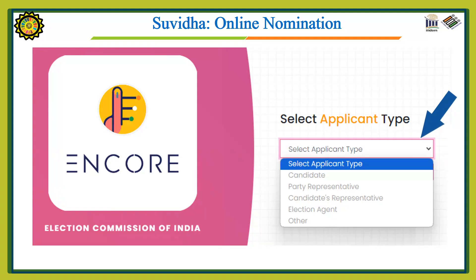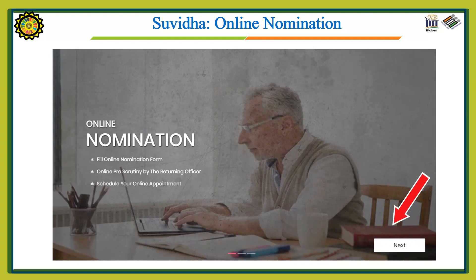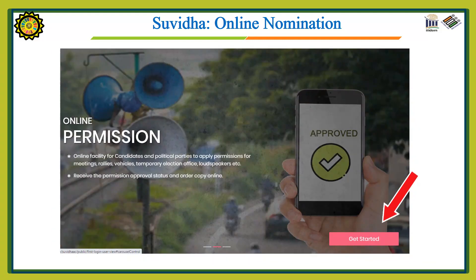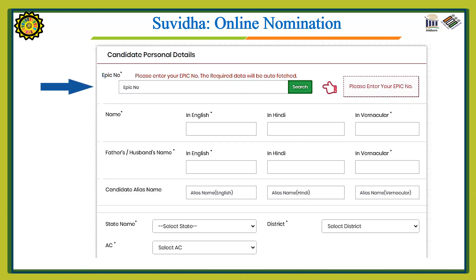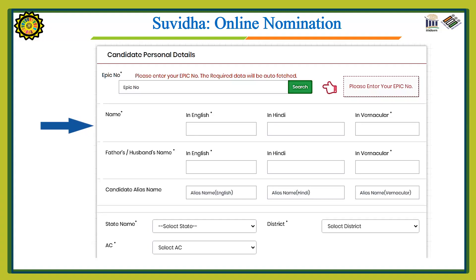After verification, a new window will appear. Since you want to submit the online nomination form, select the candidate option. In the next window, press Next, then press Get Started. Now enter the EPIC number of the candidate — all details will be fetched automatically. If there is any mistake in the candidate's name in Hindi or in the vernacular language, since the name is automatically translated, there is a facility to edit and correct the name.